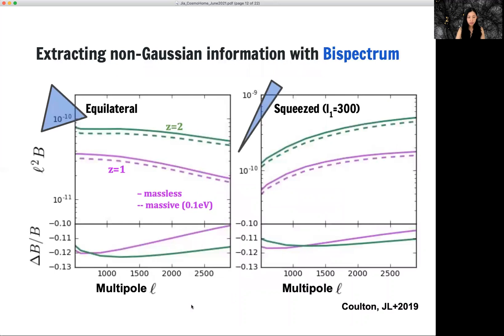So one way is through the bi-spectrum. So instead of looking at the matter clustering as a function of distance, we can also look at matter clustering as a function of triangle shapes. So imagining putting triangles on the sky and look at each side of this triangle and each angle of this triangle,